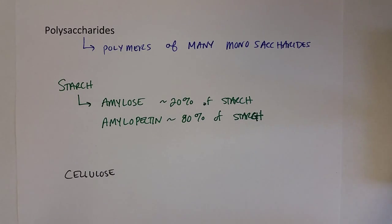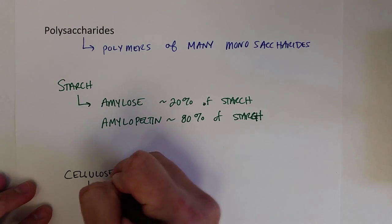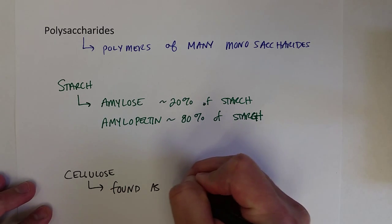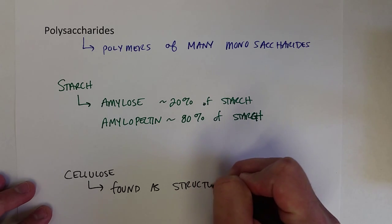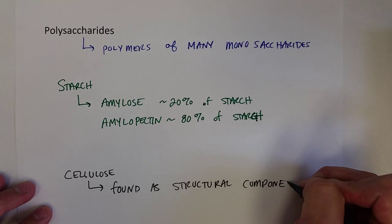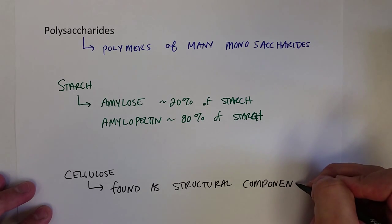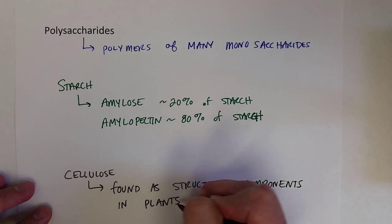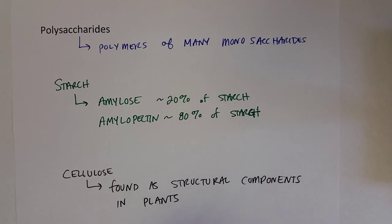Cellulose, on the other hand, is the major contributor to structural features of plants. These are mostly found as structural components in plants. Cellulose is mainly polymers of glucose monosaccharides.